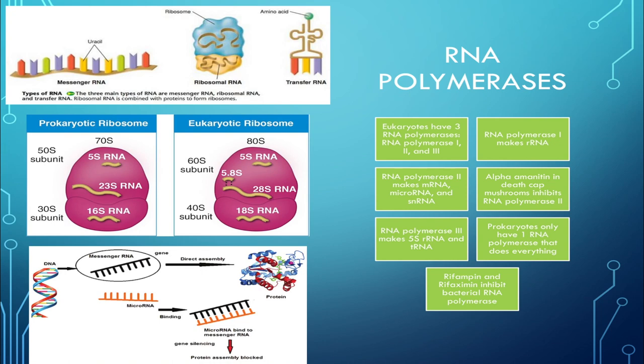If you have trouble remembering which RNA polymerase makes what, a helpful trick is that they are numbered in the same order that their products are used for protein synthesis. It goes from rRNA in the nucleus, then mRNA goes from the nucleus to the cytoplasm, where tRNA can interact with mRNA to make proteins.